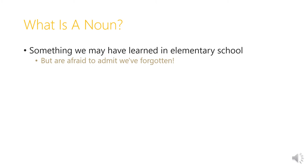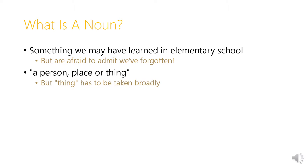What is a noun? This is something we may have learned in elementary school, but may also be afraid to admit we've forgotten. A noun is often defined in school as a person, place, or thing. This is still a valid definition in English and in Greek, but 'thing' has to be taken quite broadly.